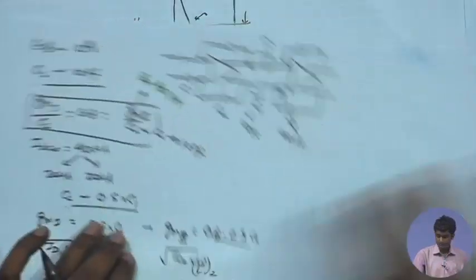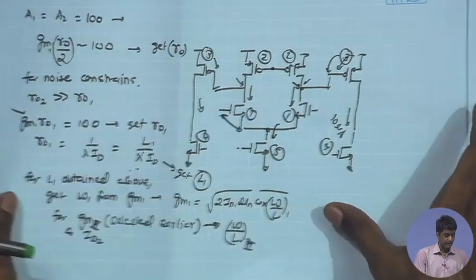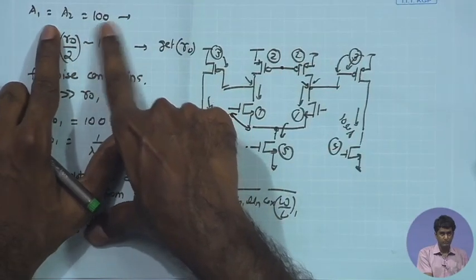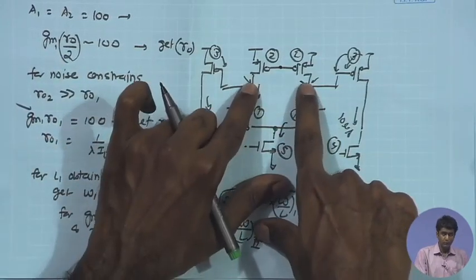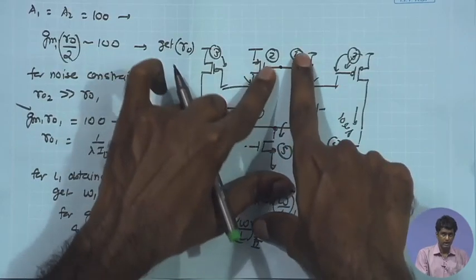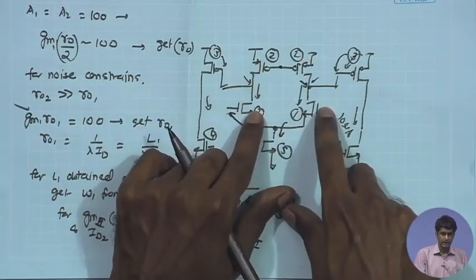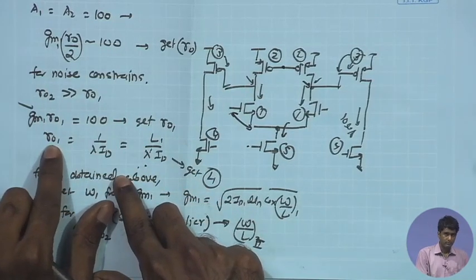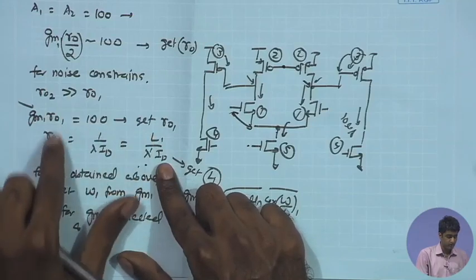To this point I have W/L of the input device of the first stage (M1) and W/L of the input device of the second stage (M3). Now I look at the gain requirement: the overall open-loop gain is 10^4, so each stage contributes 10^2. For the first stage, gain equals gm·ro because the noise constraint requires a larger L for M2, making ro of M2 larger. Setting gm1·ro1 = 100 gives the required ro1 value.